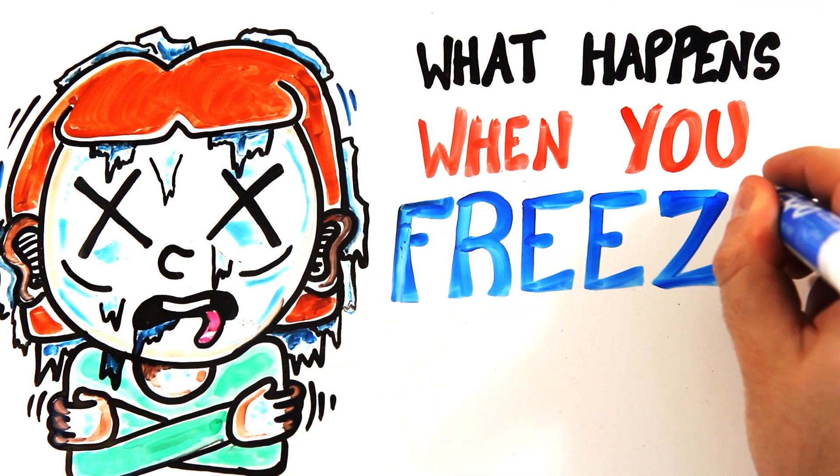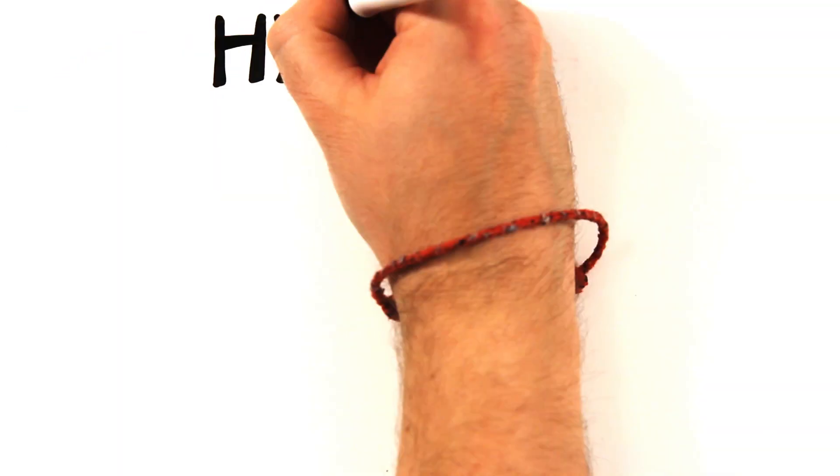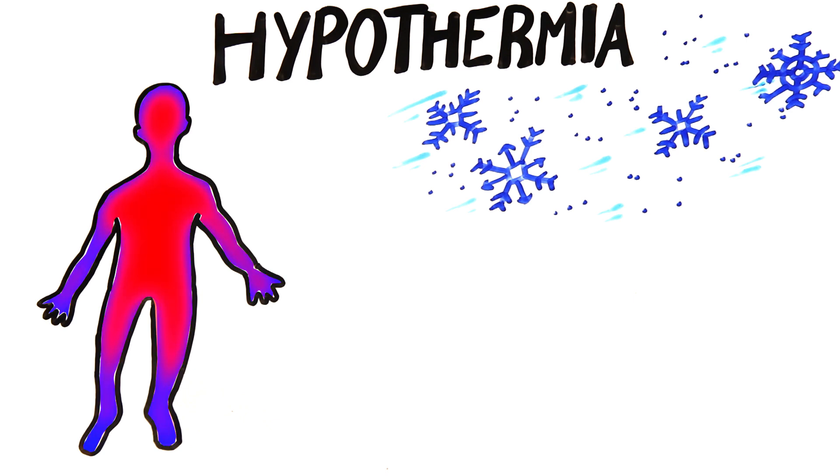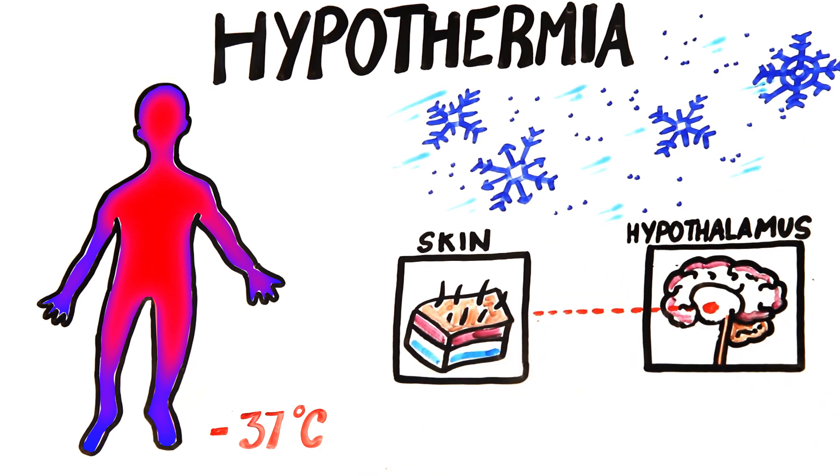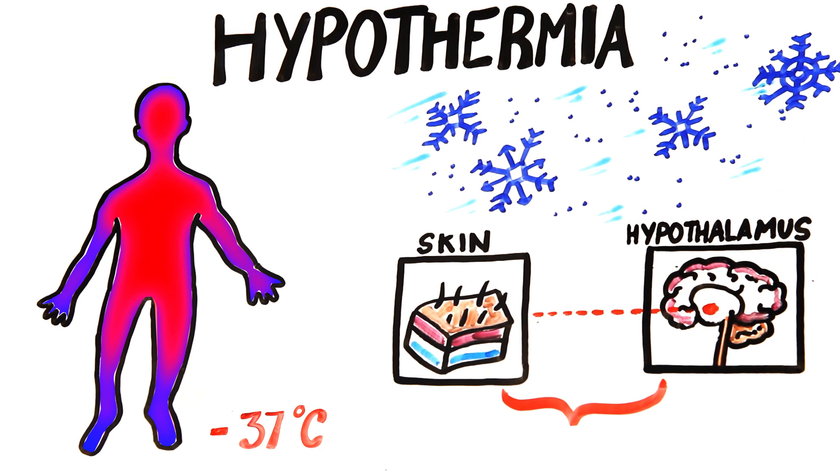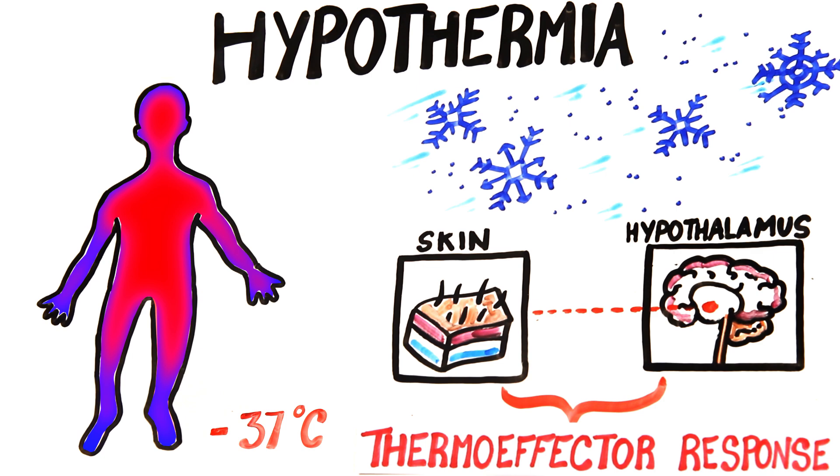So what actually happens to your body and brain when you freeze to death? Hypothermia occurs when the core body temperature drops below 37 degrees Celsius. So in the event that the body is exposed to extreme cold, within minutes signals are sent from the skin to the hypothalamus, producing what is known as the thermo-effector response.